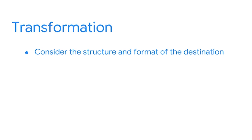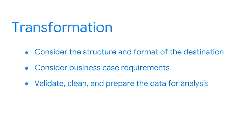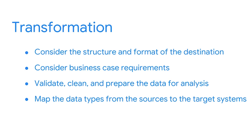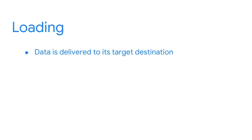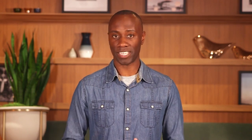Next, we have transformation. The specific transformation activities depend on the structure and format of the destination and the requirement of the business case. But these transformations generally include validating, cleaning, and preparing the data for analysis. This stage is also when the ETL pipeline maps the data types from the sources to the target systems, so that the data fits the destination conventions. Finally, we have the loading stage — when data is delivered to its target destination, which could be a data warehouse, a data lake, or an analytics platform that works with direct data feeds.